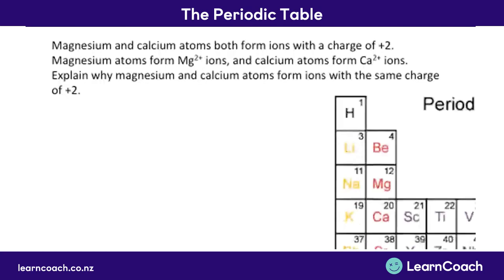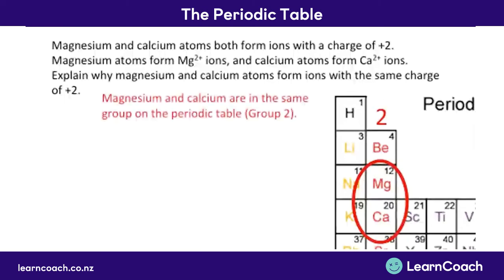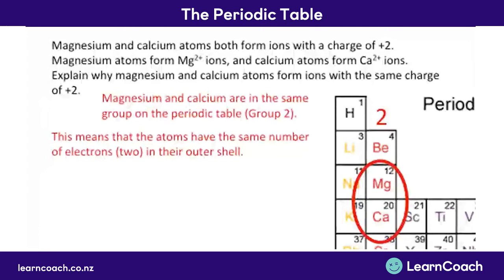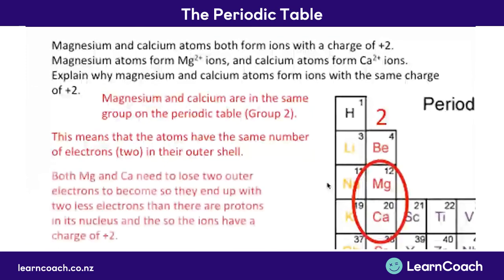If we look at our periodic table, magnesium and calcium are both in group 2. This is significant because it means both magnesium and calcium have two electrons in their outer shells. When forming an ion, an atom gains or loses electrons to get a full outer shell. So the easiest way for magnesium and calcium to do this is by losing two electrons each. If they lose two negative electrons, they're left with a charge of positive 2.